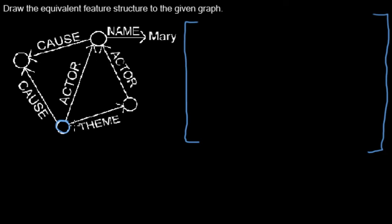And I decide I want to start with that one. Here we have a property, a complex property THEME, which points to another node. So I add the property THEME and I represent the node it points to by a new pair of brackets.